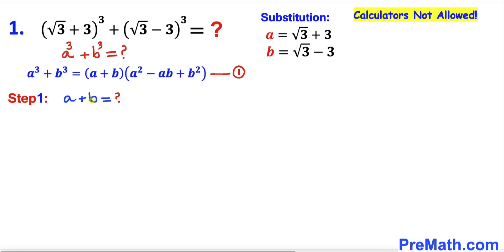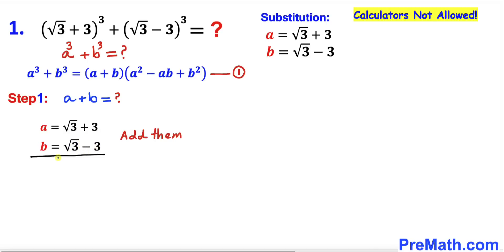Here's our very first step: let's find the value of a plus b. We know a equals square root of 3 plus 3, and b is square root of 3 minus 3. If we add these two, on the right-hand side the positive 3 and negative 3 cancel, leaving us with 2 times square root of 3. So a plus b equals 2 times square root of 3.